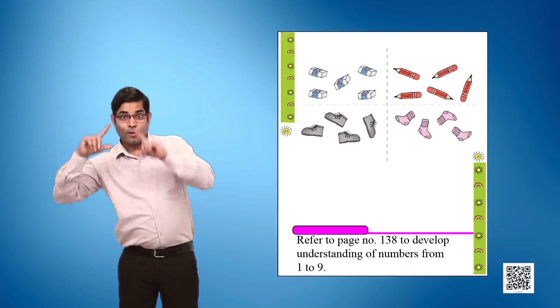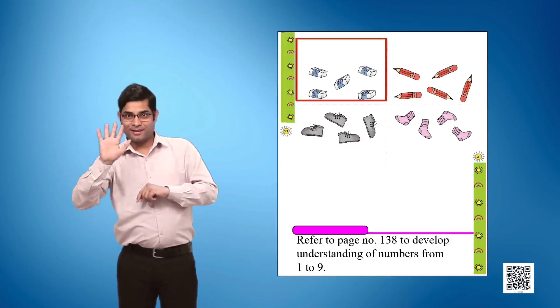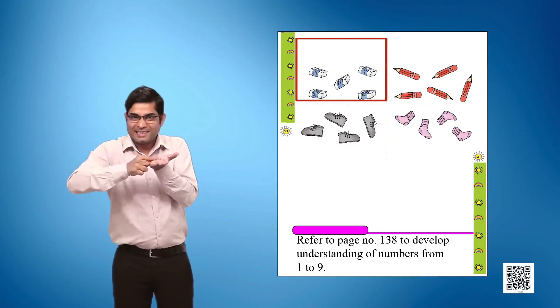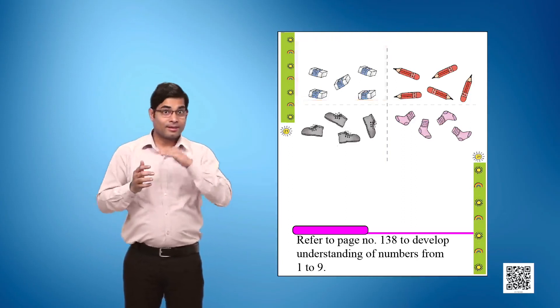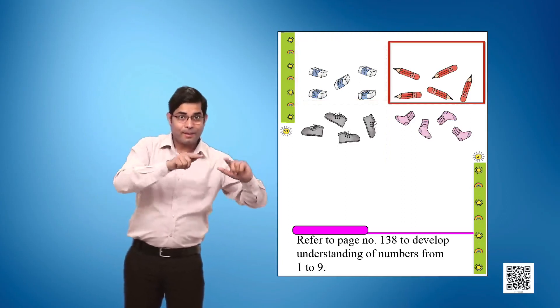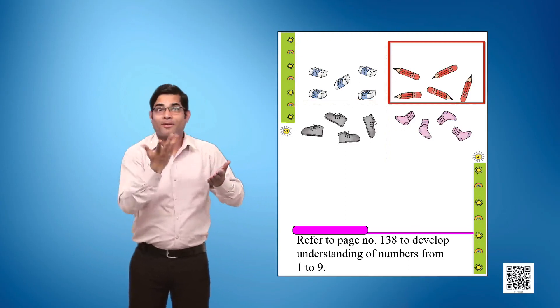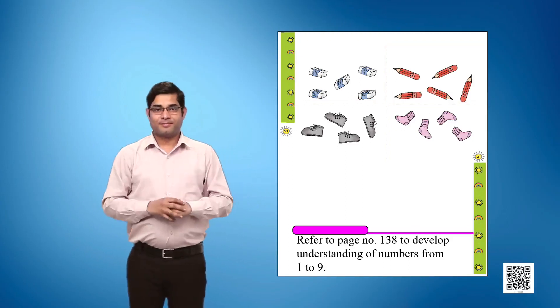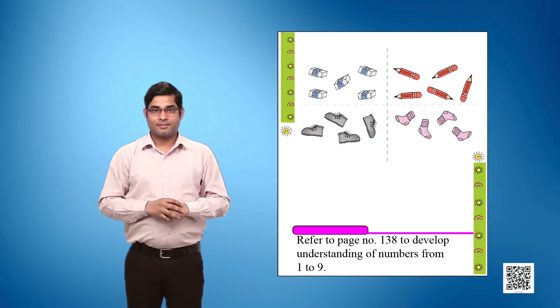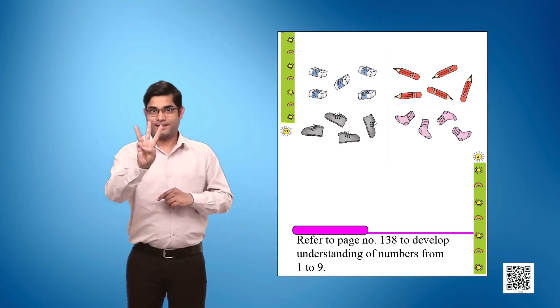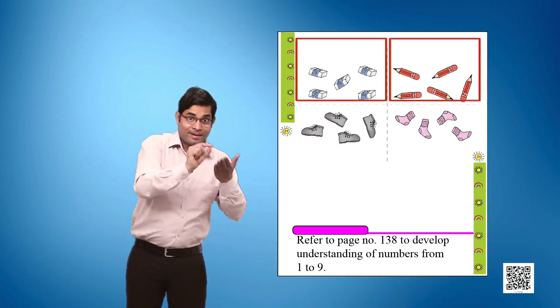Column 1, Picture 4 shows 5 erasers. Column 2, Picture 4 shows 5 pencils. Activity 3: Match the erasers with the pencils.